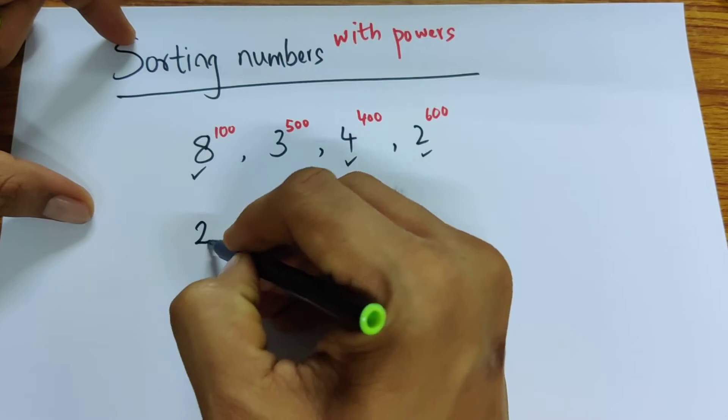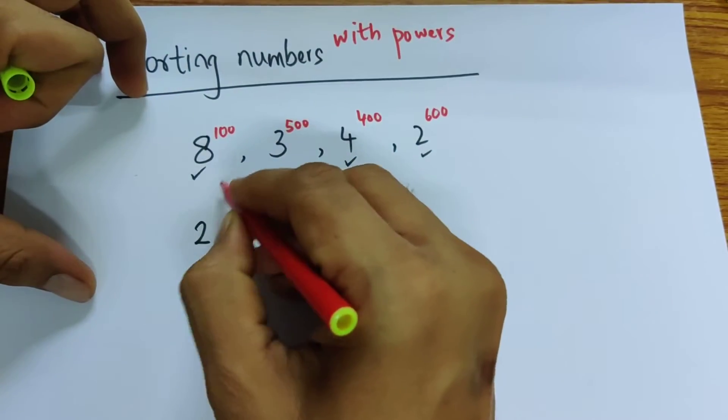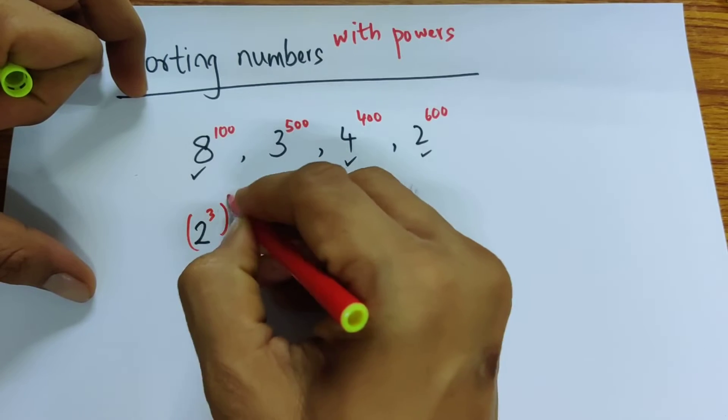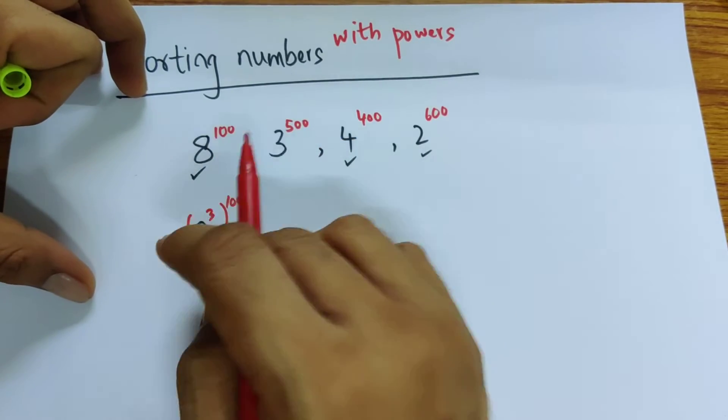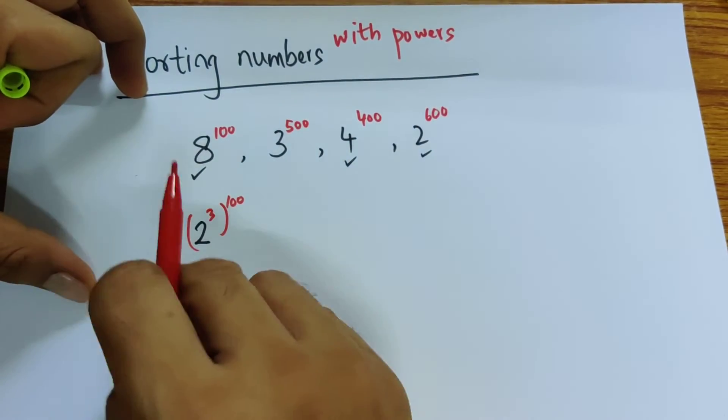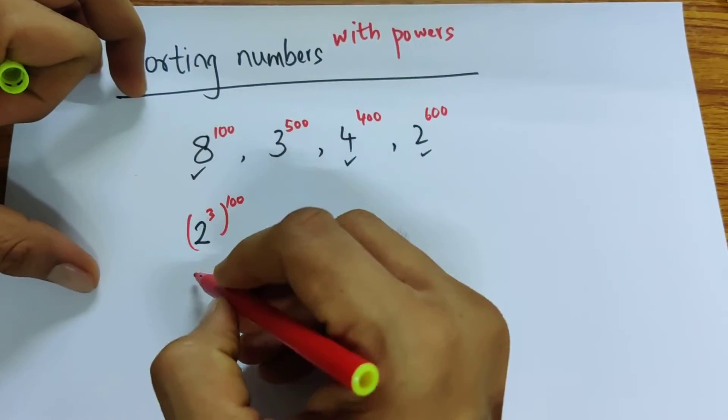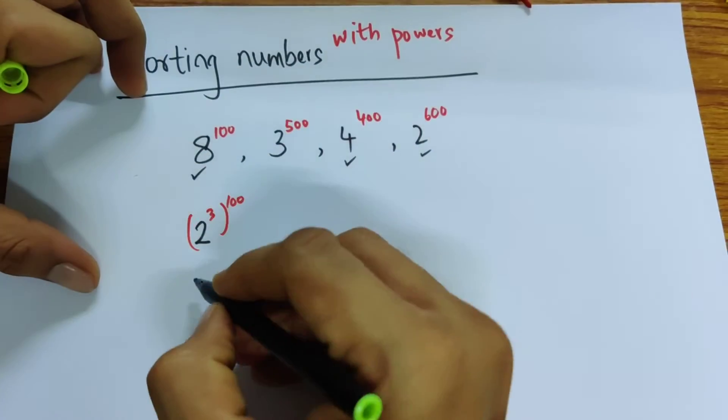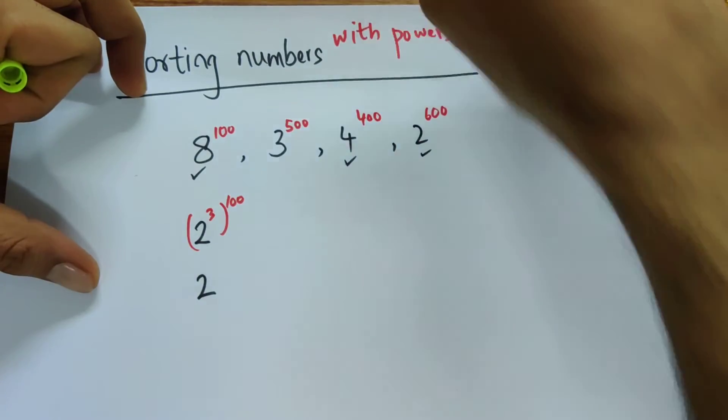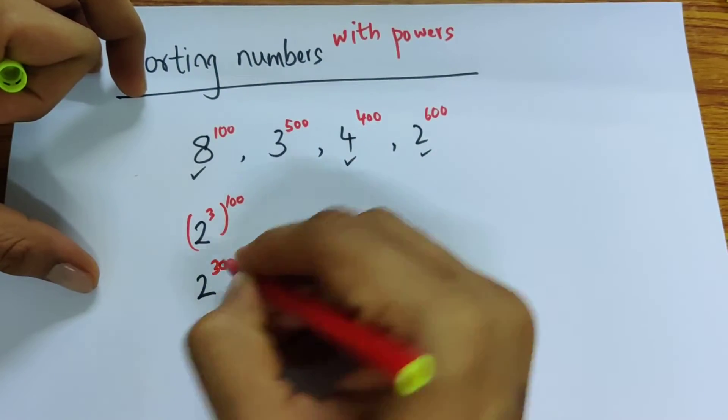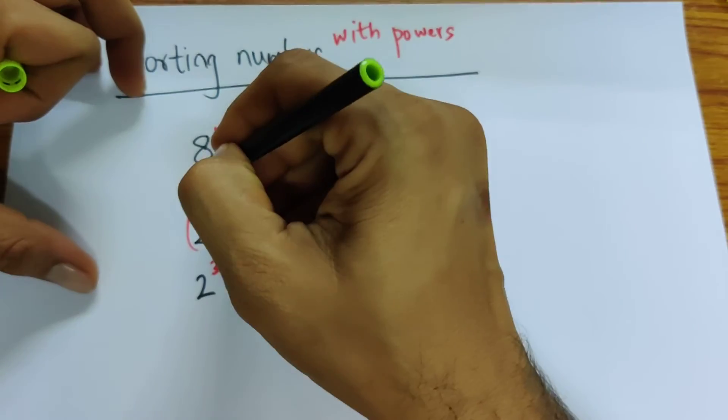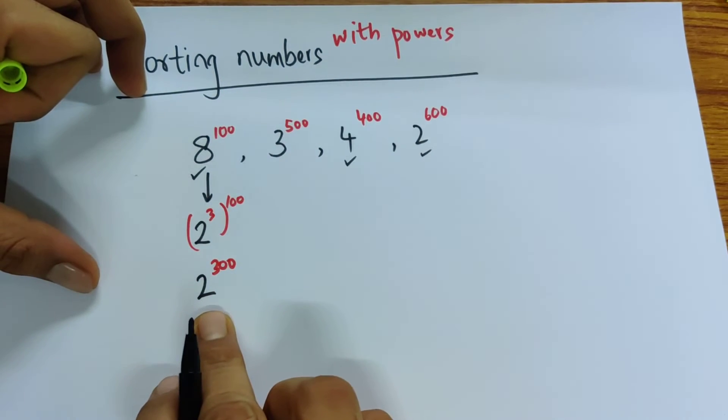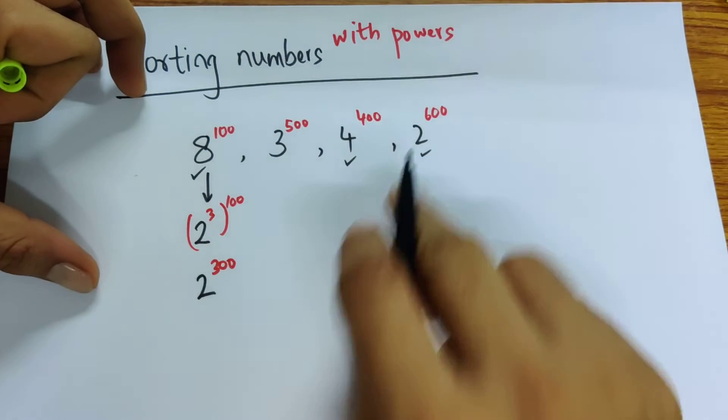8 is 2 to the power of 3, and that is to the power of 100, which means 2 to the power of 3 multiplied 100 times. So this becomes 2 to the power of 300. This is straightforward. 2 to the power of 300 is clearly smaller than that.